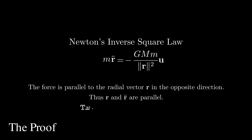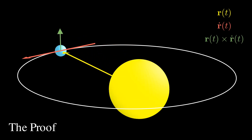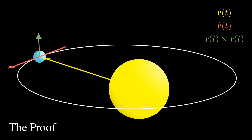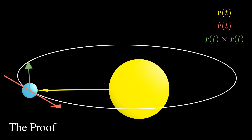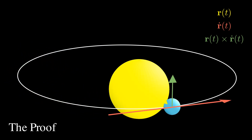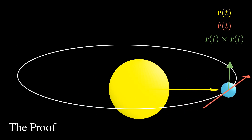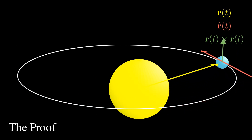Another way to say they're parallel is that their cross product is the zero vector. This cross product being zero is key to showing that the planet orbits in a plane. As shown in another video, a flat orbit is equivalent to the cross product of position and velocity being constant — in other words, R cross R-dot is always the same vector C. That green vector never changes, and that's what I need for this video.